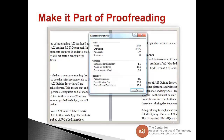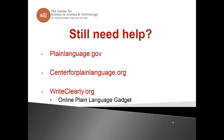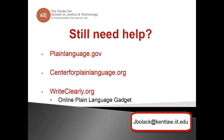Finally, make plain language a part of proofreading. Microsoft Word lets you do a spell check and grammar check, but it also gives you your readability statistics. If this doesn't automatically display when you do a spell check, you can enable it in the File Options Proofing section, and it will tell you what reading level your paper is at and the percentage of passive sentences. If you still need help, you can go to plainlanguage.gov, the Center for Plain Language at centerforplainlanguage.org, or writeclearly.org, which has a great online plain language gadget and a CALI lesson written by one of our legal aid attorneys that uses A to J guide interviews on plain language specifically. Thank you for coming today.